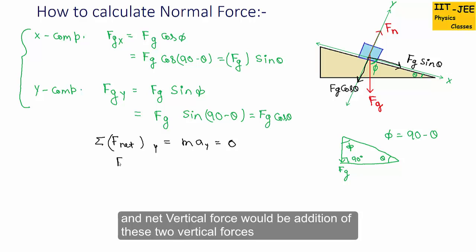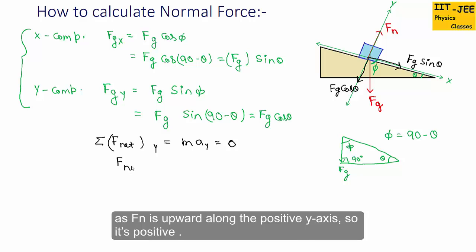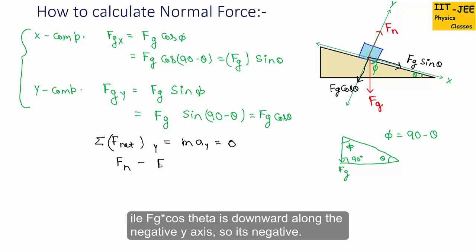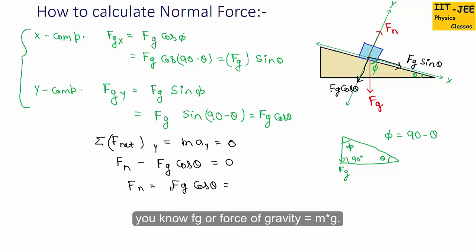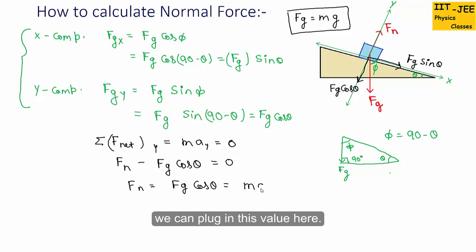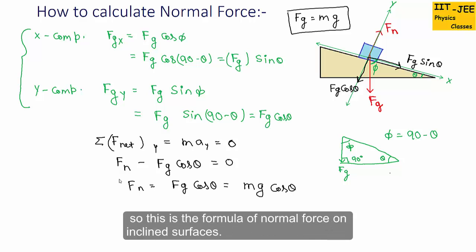The net vertical force is the sum of the two vertical forces. fn is upward along the positive y-axis so it is positive, while fg·cos(theta) is downward along the negative y-axis so it is negative. Setting this equal to zero gives fn = fg·cos(theta). Since fg = mg, we get fn = mg·cos(theta). This is the formula for normal force on inclined surfaces.